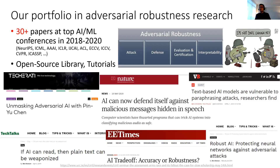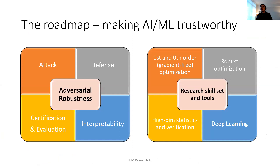This is not only a topic of interest to researchers — general audiences share concerns about AI that cannot be trusted and how to make models trustworthy. We have a lot of news coverage of our research outputs. Here is a high-level overview of topics and research skill sets important toward making AI trustworthy. This is a diverse, emerging, and rapidly changing research area, and your skills can certainly contribute to research in adversarial robustness.